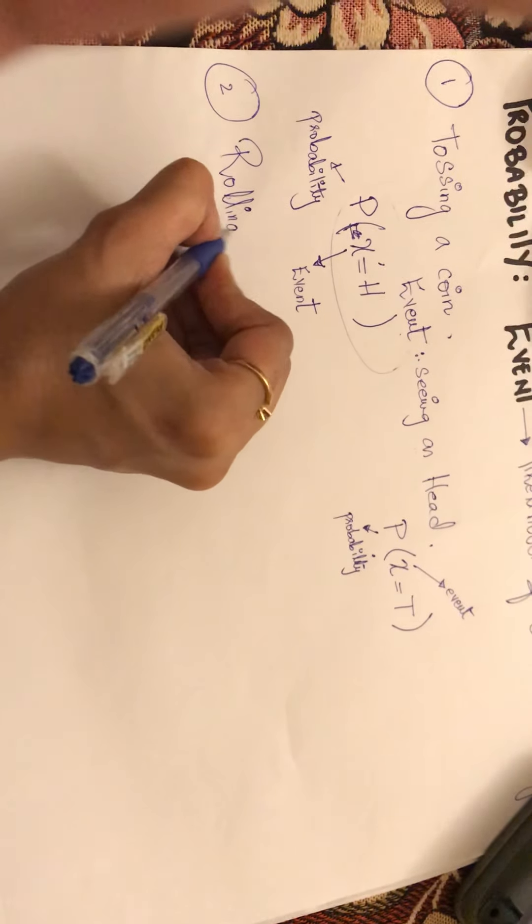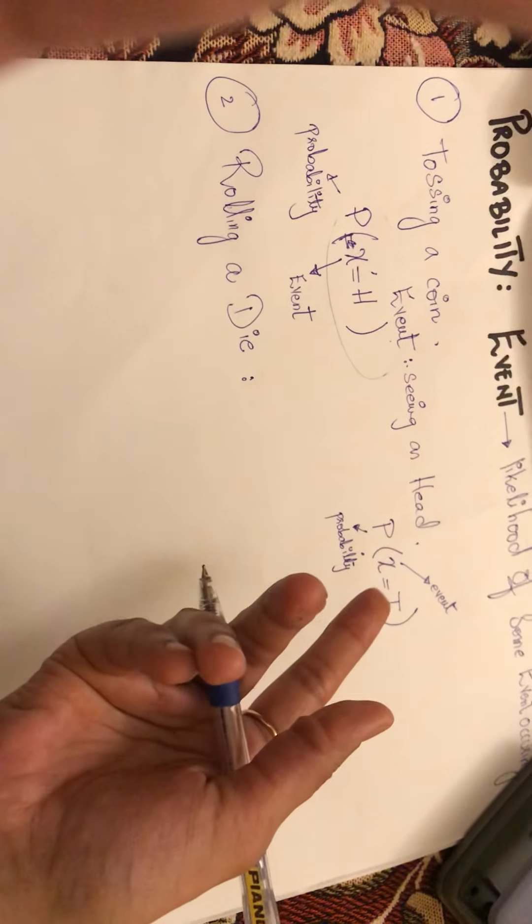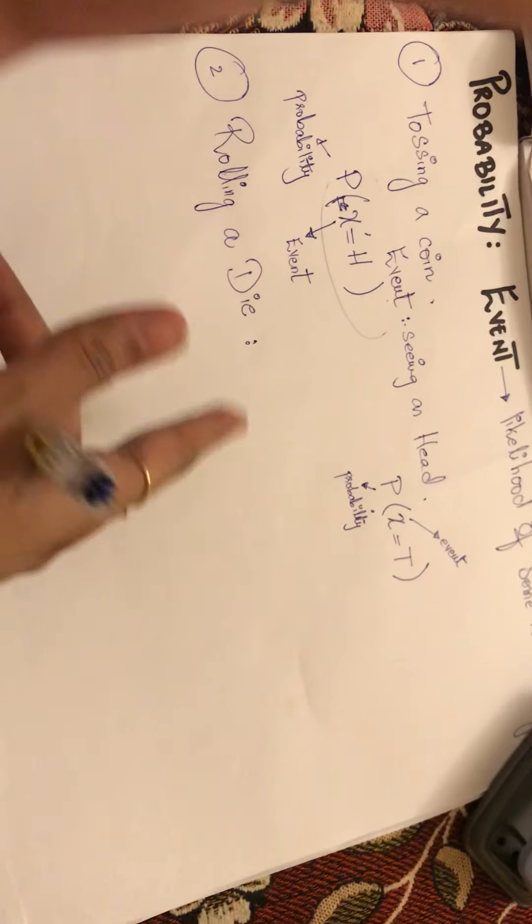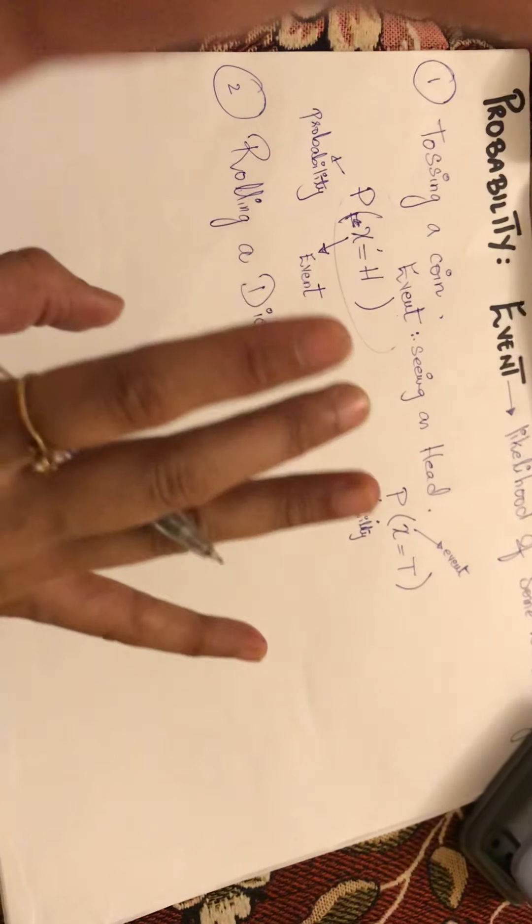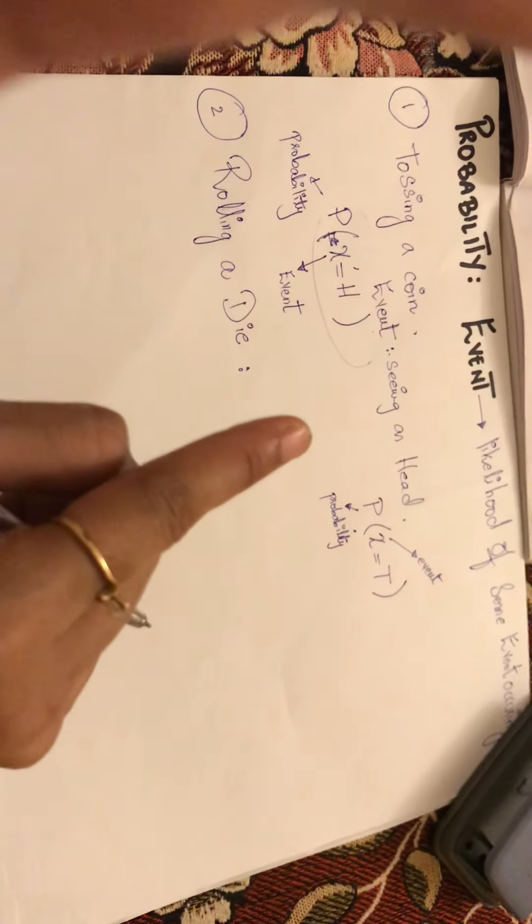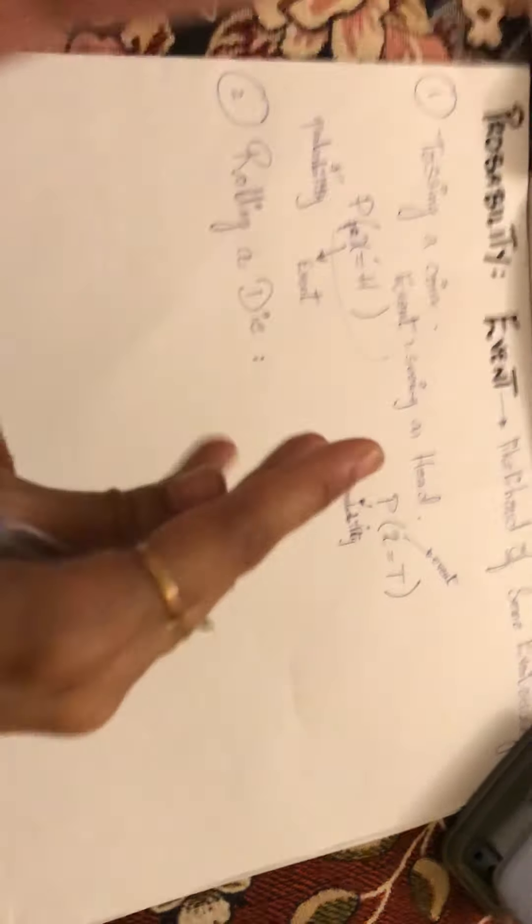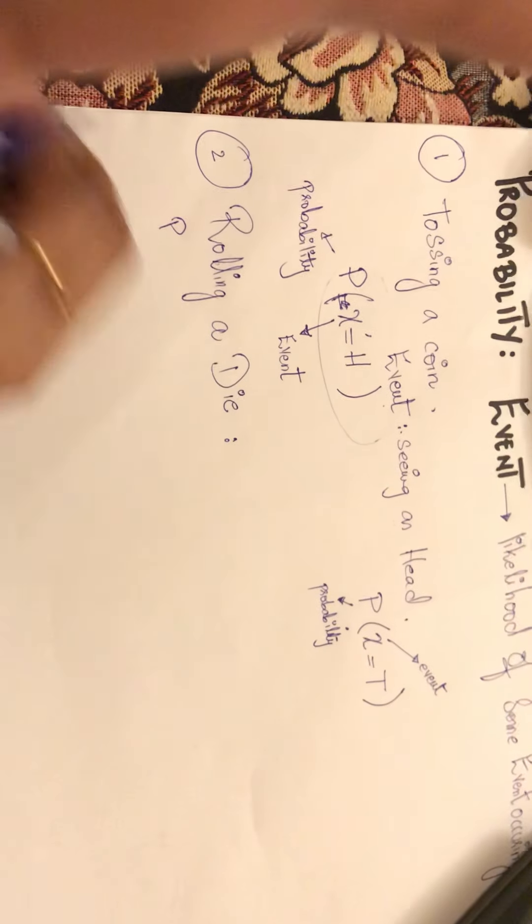The second example was rolling a die. You play Ludo and you throw the die, and whatever number appears, that is your event. For example, I threw a die and six appears - now that is my event. However, my possible outcomes would be my sample space: one, two, three, four, five, six. But my event is six. How do we write that? P signifies probability, bracket open, X is the event.